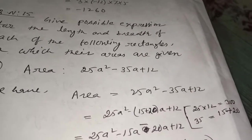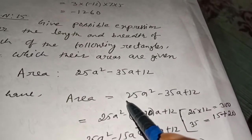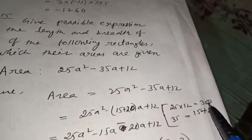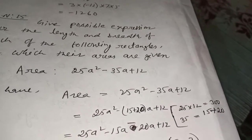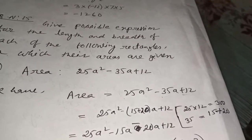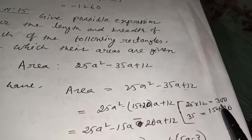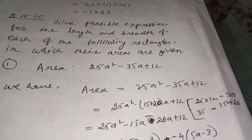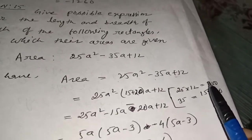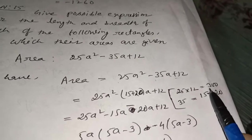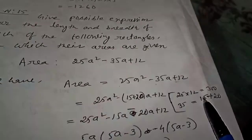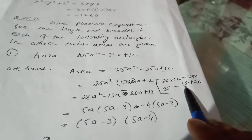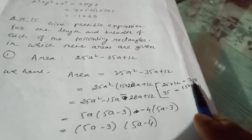The area is 25a² - 35a + 12. To factorize by splitting the middle term: multiply the coefficient of a² (which is 25) by the constant (12) to get 300. We need two numbers that multiply to 300 and add to 35. Those numbers are 15 and 20, since 15 + 20 = 35 and 15 × 20 = 300.